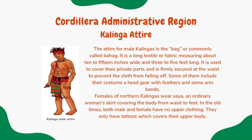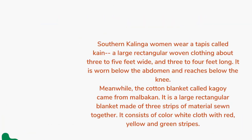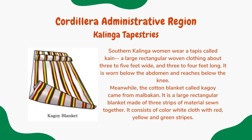The attire of male Kalingas is the labag, commonly called bahag — a long textile or fabric measuring about 10 to 15 inches wide and 3 to 5 feet long, used to cover their private parts and secured firmly at the waist. Some include a headgear with feathers and armbands as part of their costume. Southern Kalinga women wear a tapis called kain, a large rectangular woven cloth about 3 to 5 feet wide and 3 to 4 feet long, worn below the abdomen reaching below the knee. The cotton blanket called kagoy from Malbakan is a large rectangular blanket made of three stripes of material sewn together, consisting of white cloth with red, yellow, and green stripes.